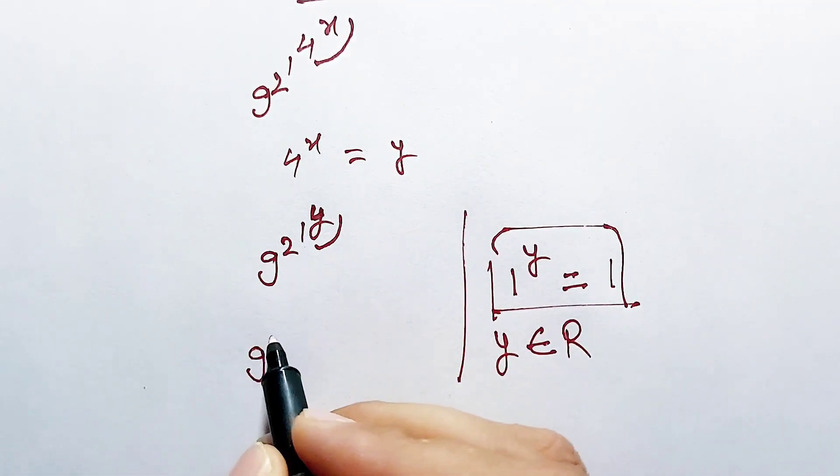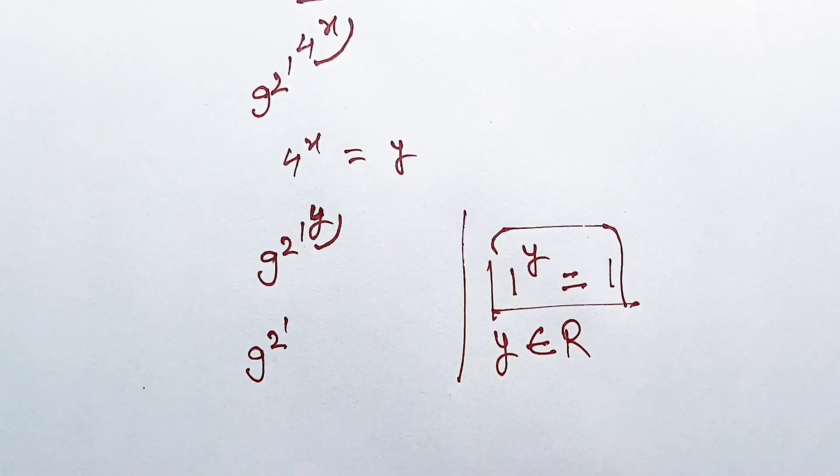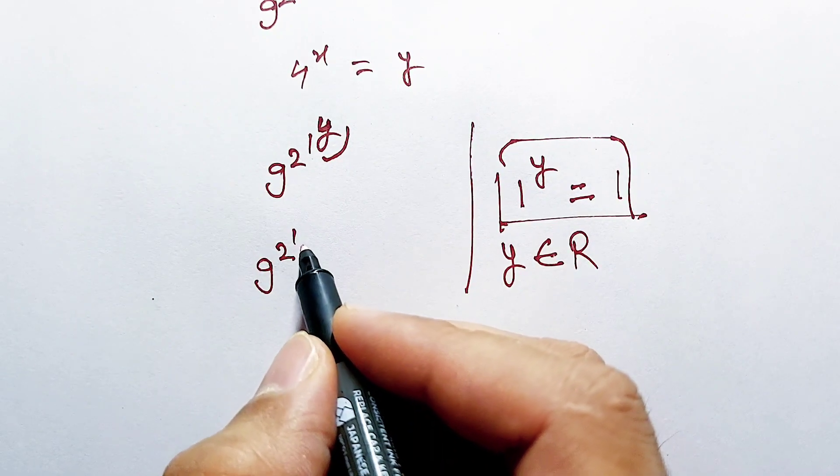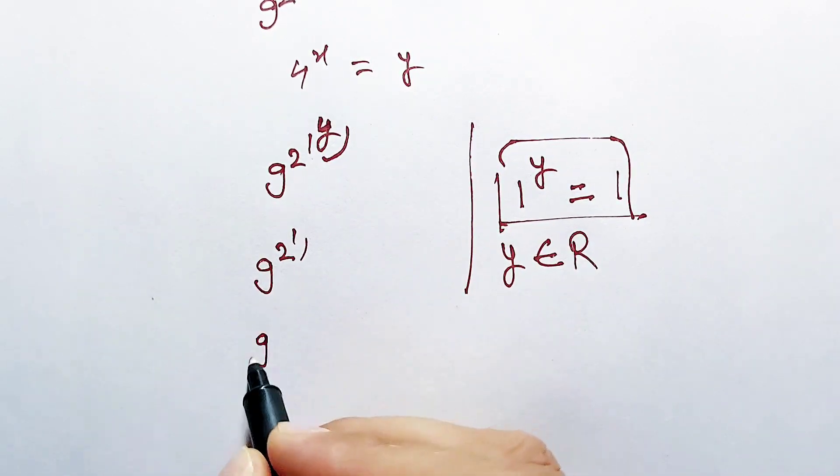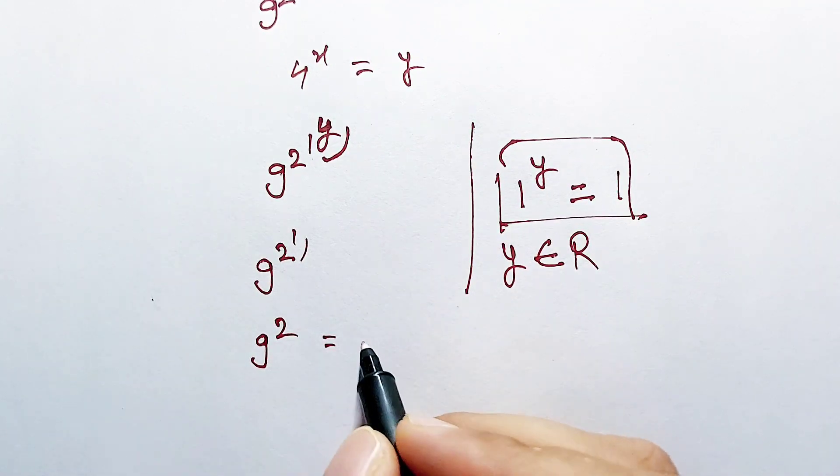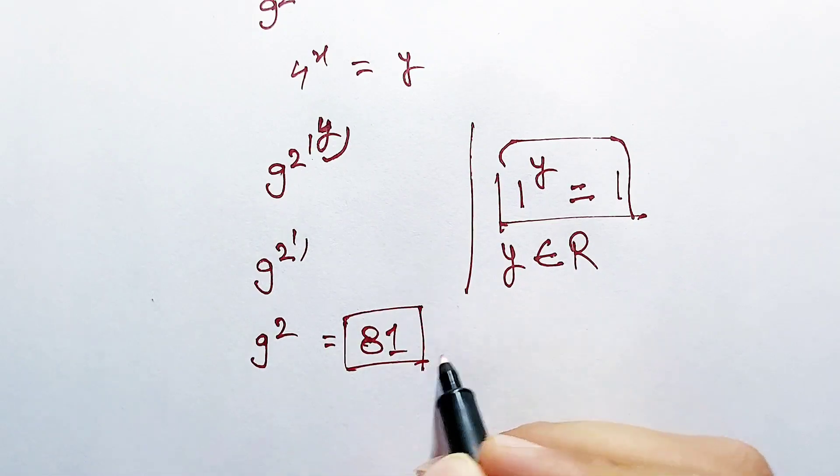So this part of the question is equal to 9 power 2 power 1. Now 2 power 1 is equal to 2, and 9 power 2 is equal to 81. And that is the solution.